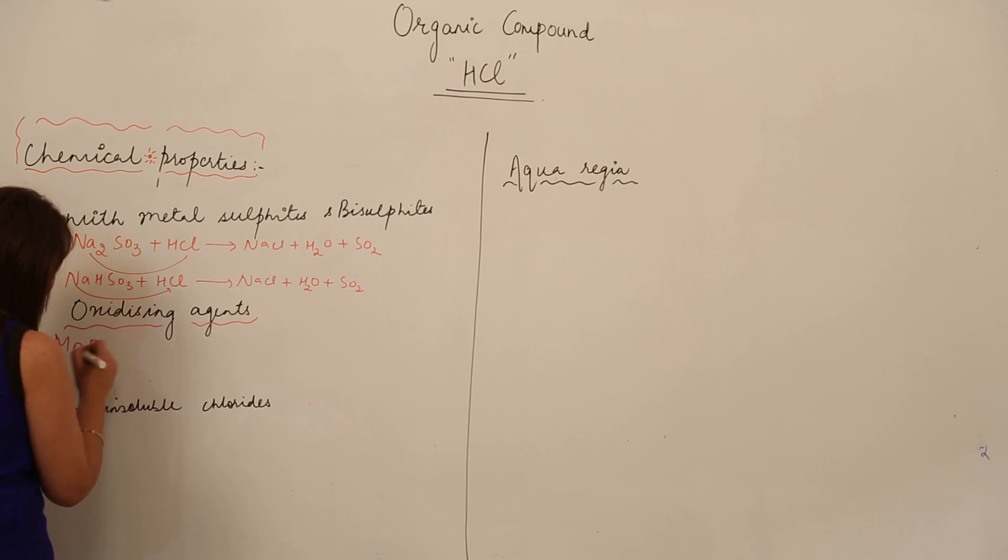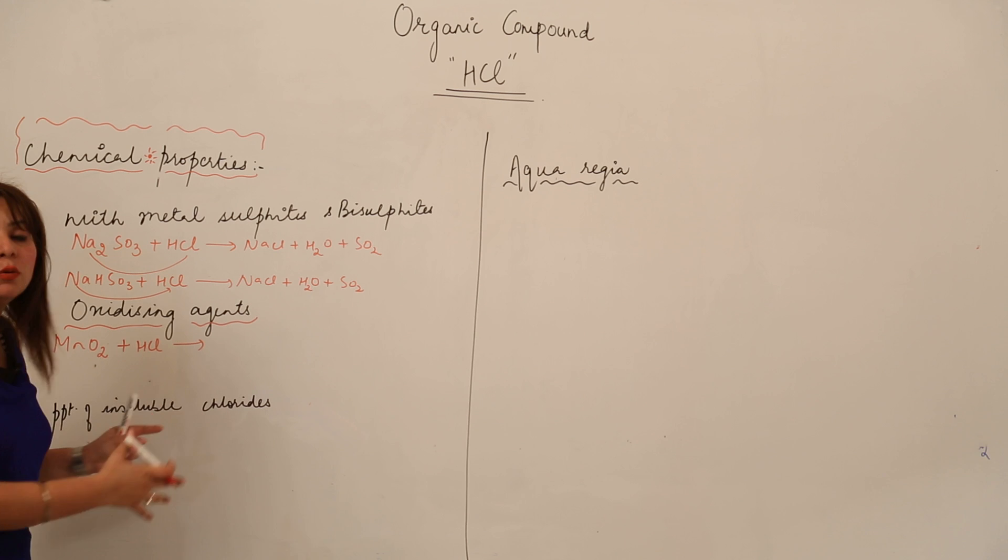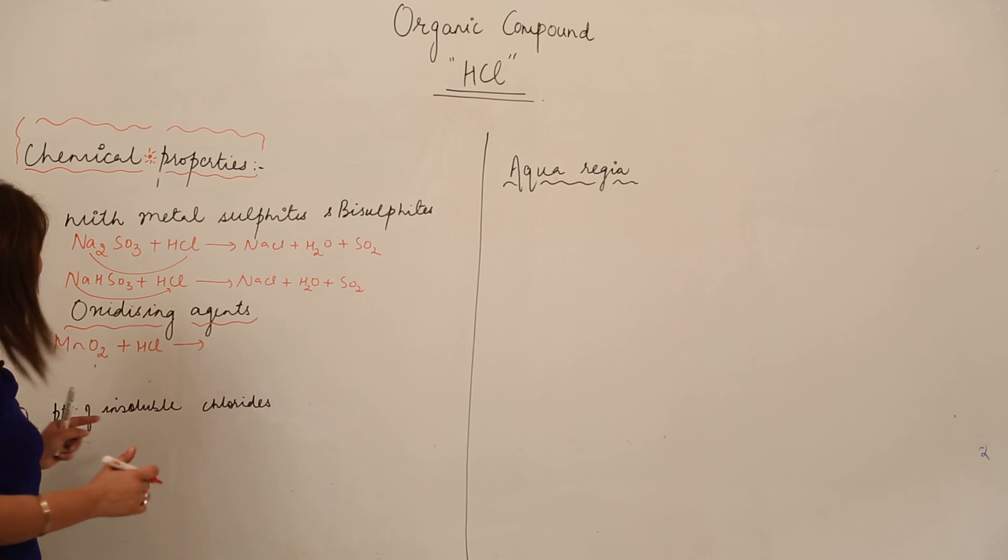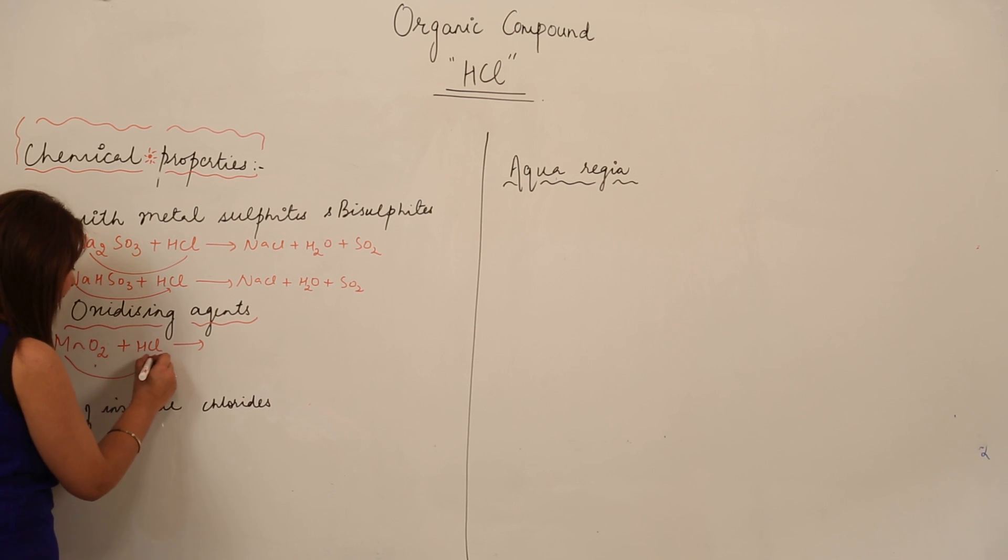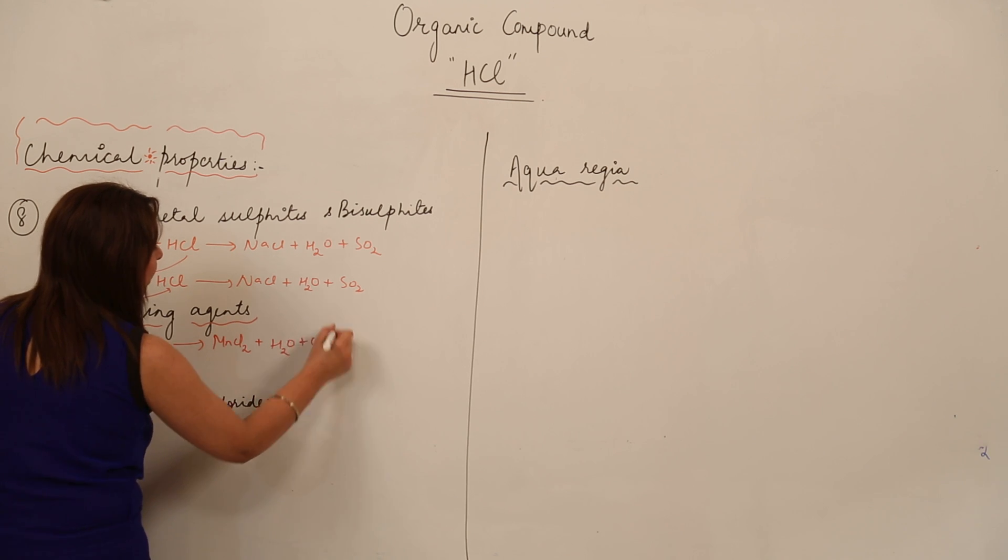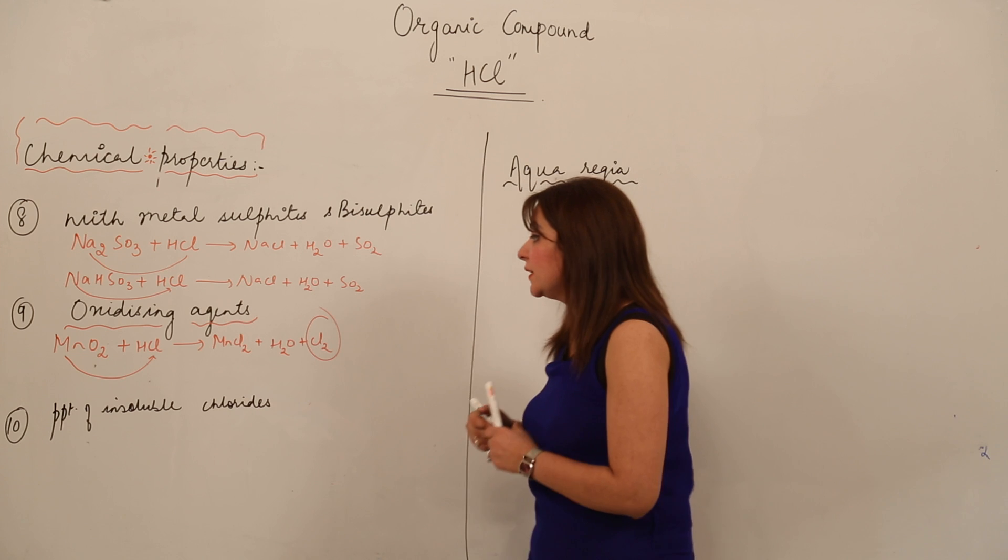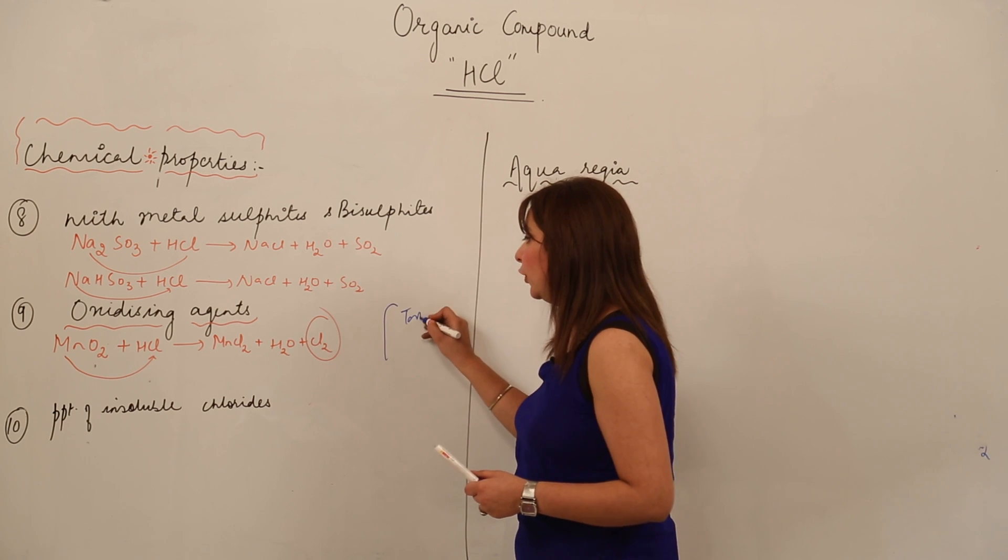What example am I taking? Suppose it is MnO2, manganese dioxide, reacting with hydrogen chloride. Again, you can see two compounds, so that means a double displacement reaction. It's going to react on this side, forming manganese dichloride, water vapor, and chlorine gas. You'll be surprised to know this is also a test for HCl.